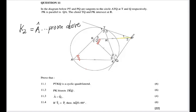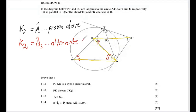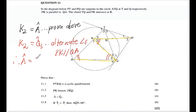The parallel lines PK and QA form a Z-shape, giving alternate angles. So K2 equals Q3, with the reason being alternate angles and the pair of parallel lines PK parallel to QA. Since K2 equals A and K2 equals Q3, we conclude: angle A equals angle Q3.